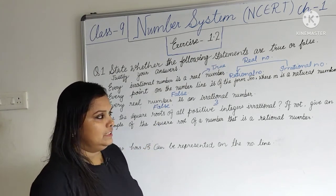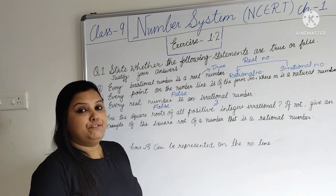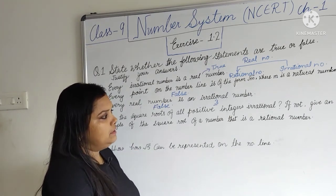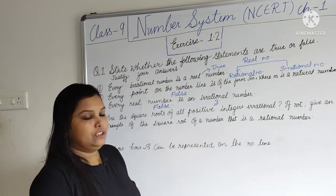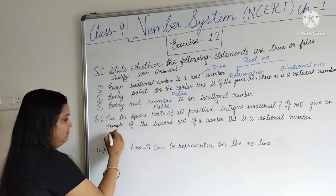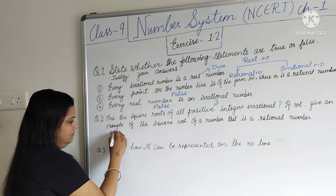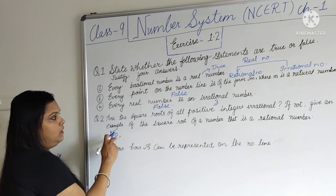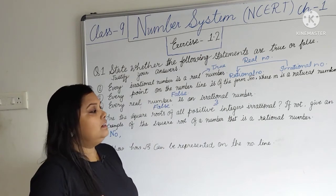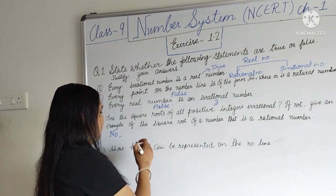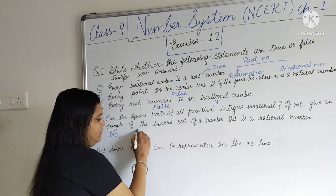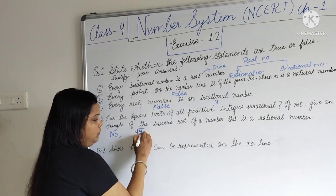Now moving to question number 2: are the square roots of all positive integers irrational? If not, give an example of the square root of a number that is a rational number. The answer is NO — the square roots of all positive integers are not irrational. For example, √4.